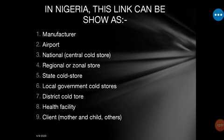The last point in the chain is the mother and child clinic, where they are going to receive the vaccine. Throughout this chain from link one to link eight, you must make sure that your vaccine is not exposed to heat — either during transportation or during storage.